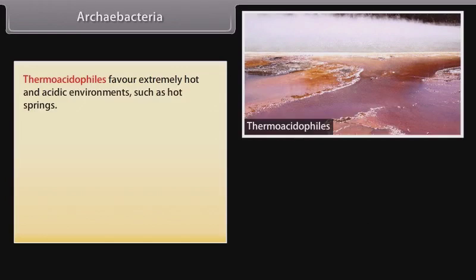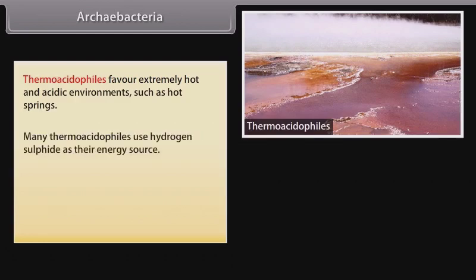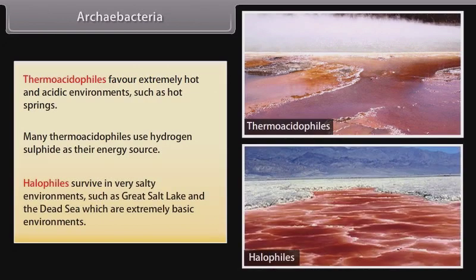Thermoacidophiles favour extremely hot and acidic environments such as hot springs, and many use hydrogen sulfide as their energy source. Halophiles survive in very salty environments such as the Great Salt Lake and the Dead Sea, which are extremely basic environments.